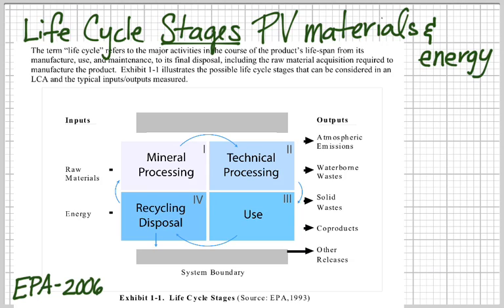You'll notice that there are also going to be inputs of materials and energy. And over the different stages of the life cycle, there will also be outputs of atmospheric emissions — that could be CO2 — waterborne wastes, solid wastes, co-products, and other releases. These are very important things to follow, in particular when we're talking about new technologies or emerging and expanding technologies like photovoltaics.